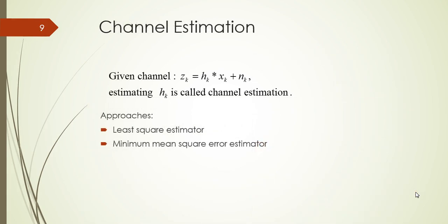So doing the channel estimation, as we saw from the previous slide, the architecture, given the channel, we estimating HK. So this process is called channel estimation. So there are, in this project, there are two approaches to do this. The first one is least square estimator. The other one is minimum mean square error estimator, or MMSE.